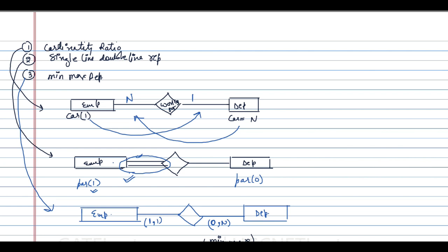Now let us look at the different kinds of relationships, such as one-to-one, one-to-many, many-to-one, and so on.